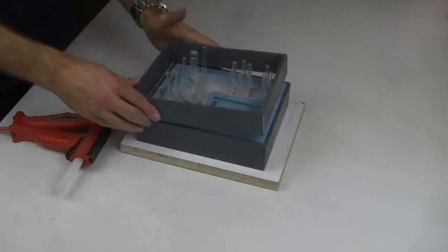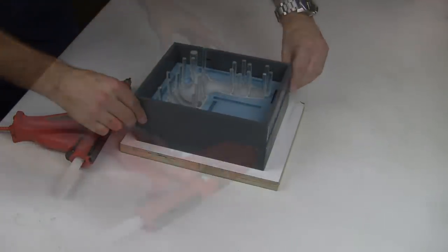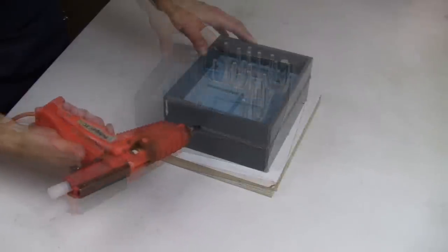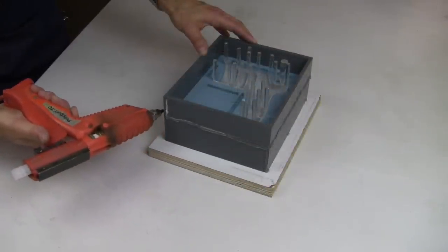We can then place the mold box onto the lower half of the mold. Hot glue is used to seal the two halves together and prevent liquid silicone from leaking out once poured.